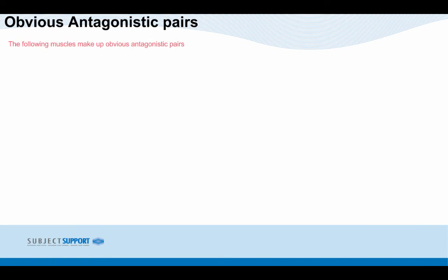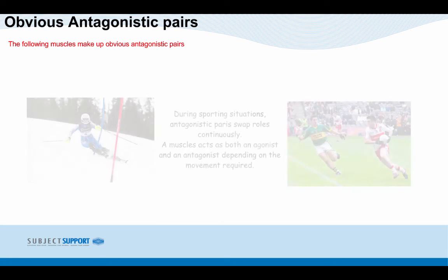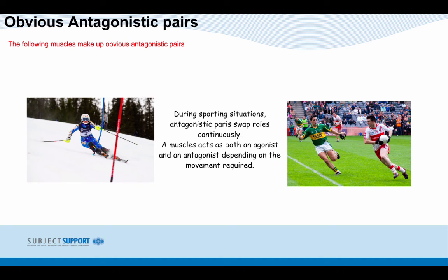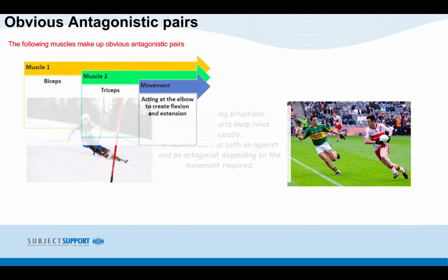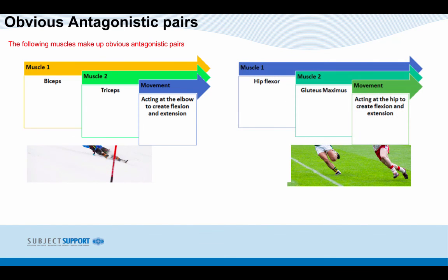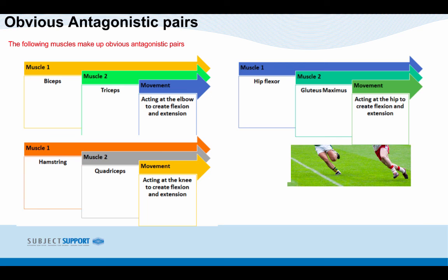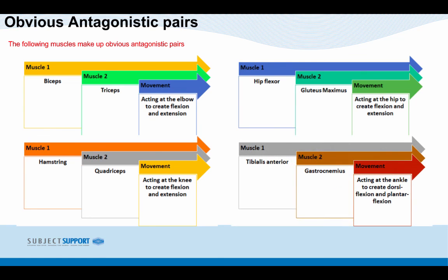Obvious antagonistic pairs. During sports situations, antagonistic pairs swap roles continuously — a muscle acts as both an agonist and an antagonist depending on the movement required. Some obvious pairs are: the biceps and triceps, acting at the elbow to create flexion and extension; the hip flexor and gluteus maximus, acting at the hip to create flexion and extension; the hamstring and quadricep, acting at the knee to create flexion and extension; and the tibialis anterior and gastrocnemius, acting at the ankle to create dorsiflexion and plantar flexion.